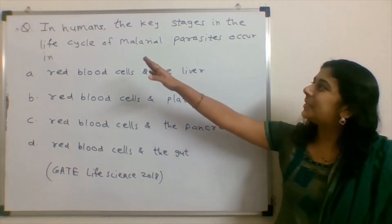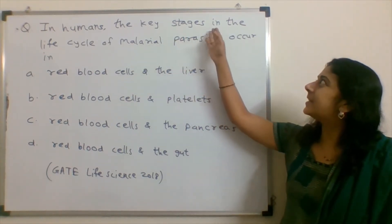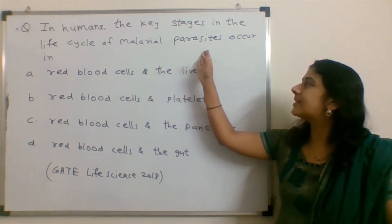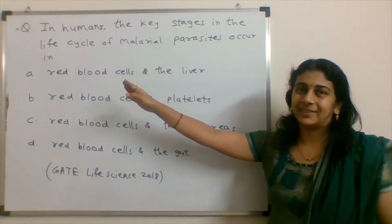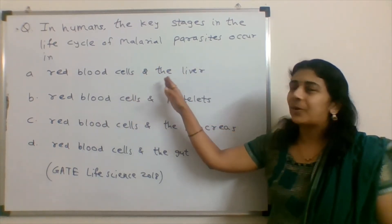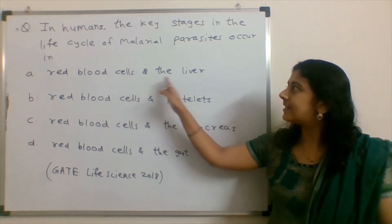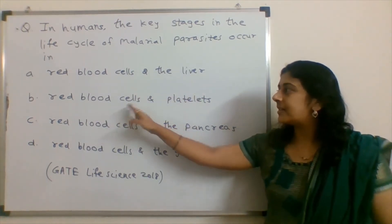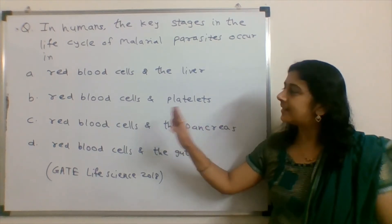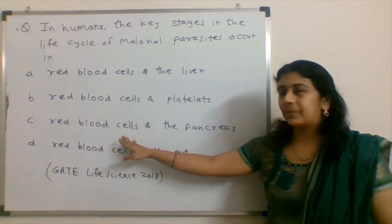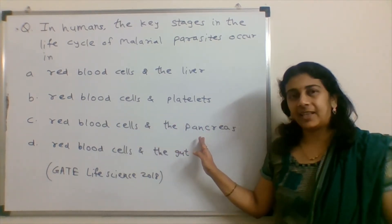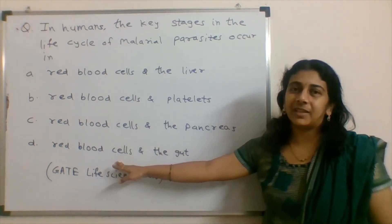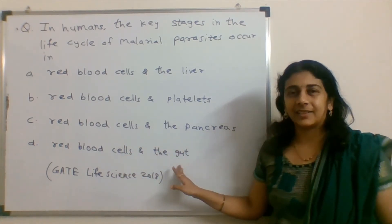In humans, the key stages in the life cycle of malaria parasites occur in: option A, red blood cells and the liver; option B, red blood cells and platelets; option C, red blood cells and the pancreas; and option D, red blood cells and the gut.